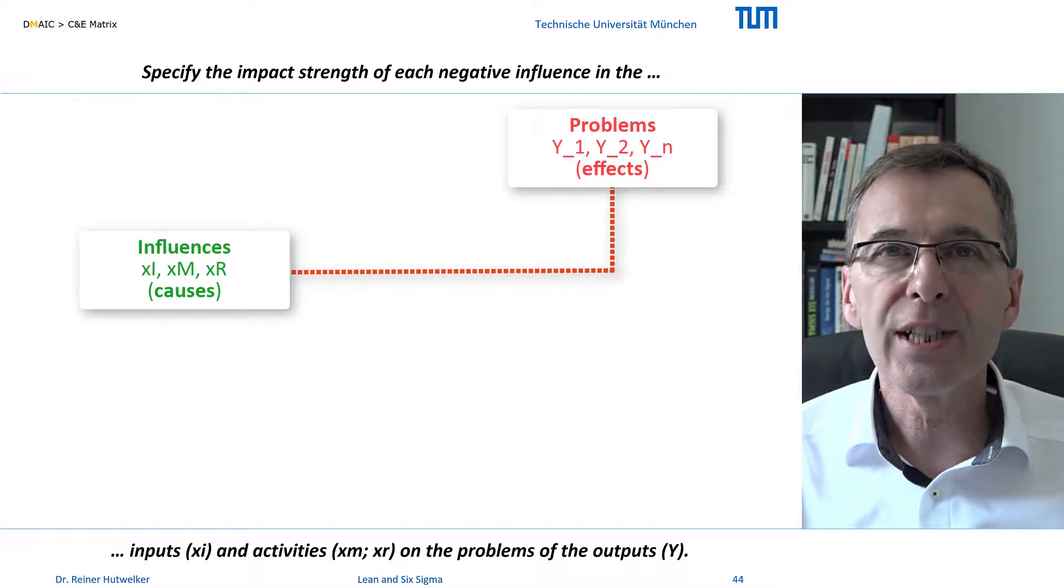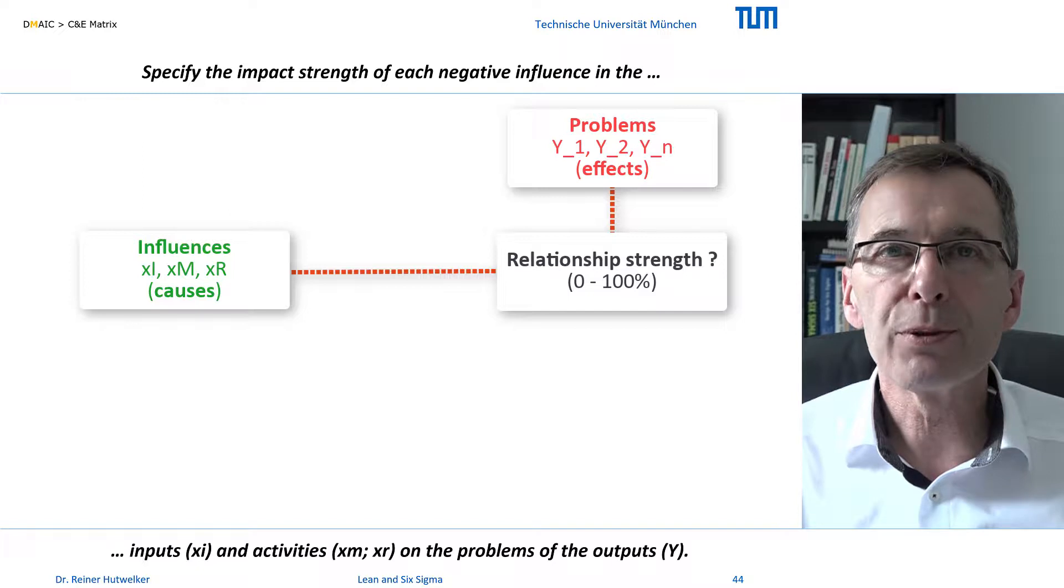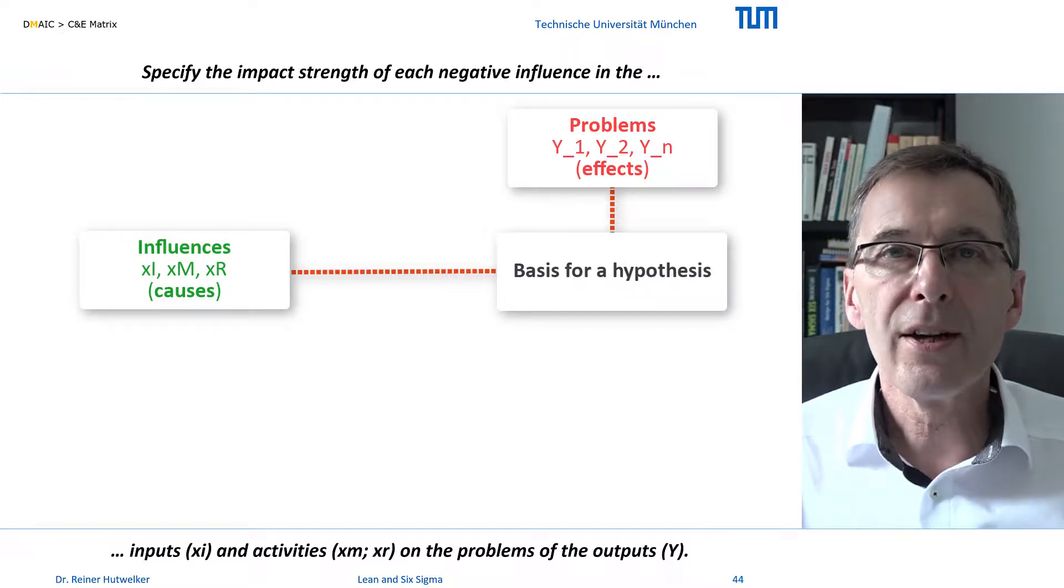Experts should now assess the strength of the relationship of each influence on each problem. The resulting influence-problem pairs serve as a basis for statistical hypothesis. Thus, the C and E matrix represents the central function of Six Sigma, Y is a function of X, like no other tool.